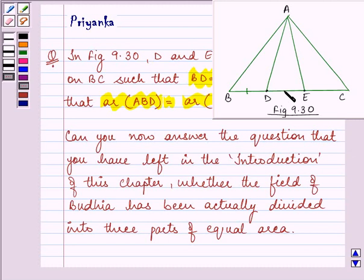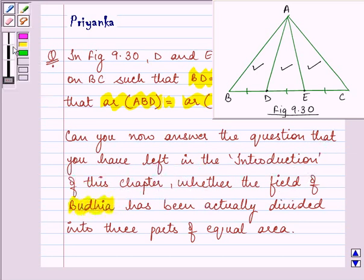We are given that BD is equal to DE is equal to EC and we need to prove that area of triangle ABD is equal to area of triangle ADE is equal to AEC. And the second part of the question says, can you now answer the question that you have left in the introduction of this chapter, whether the field of Budhia has been actually divided into three parts of equal area? So, let us first prove the first part and then we will proceed on with the second part.